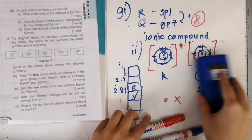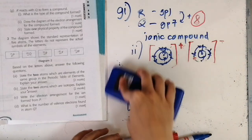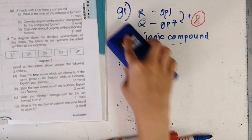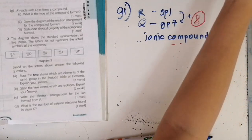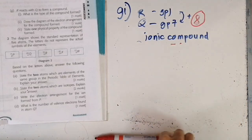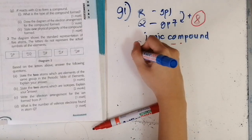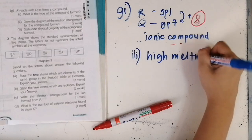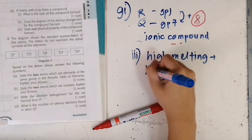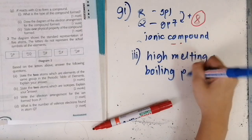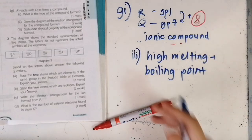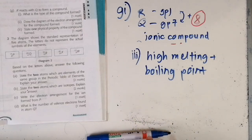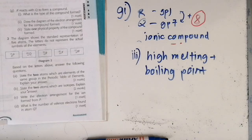Question 1g3: state one physical property of the compound formed. The compound is an ionic compound. One physical property is high melting and boiling point. There are three physical properties to remember in total — another is that ionic compounds are soluble in water but insoluble in organic solvents. That's the end of question one.